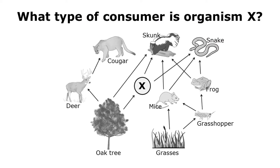Here is a food web where one organism has been replaced with the letter X, so I have to answer based on how well I understand how to read this food web. The question is: what type of consumer is organism X — an herbivore, a carnivore, or an omnivore? There's only one arrow pointing at X, and that's pointing from the oak tree, so the only organism being consumed by X is the oak tree. If this organism is eating only plants, then X must be an herbivore.